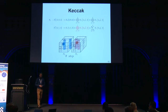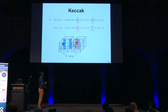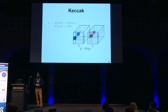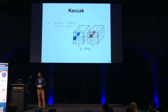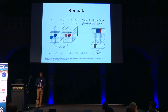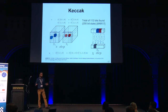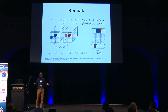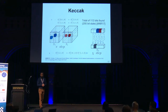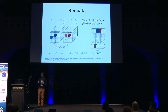Going through one round of Keccak: first we apply theta, with its intricate dependencies. Focusing on two specific bits, we apply the ρ step — a shift along the Z lane — then π, a shift in the XY plane. These last two are only wiring and don't create any problem. But then comes the non-linear permutation χ, which combines those two bits into just one bit, failing non-completeness. We found a total of 112 bits failing non-completeness out of 200 bits of the state, using a tool we implemented ourselves.